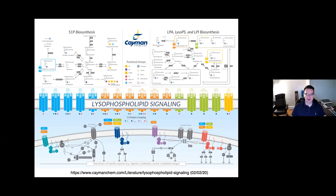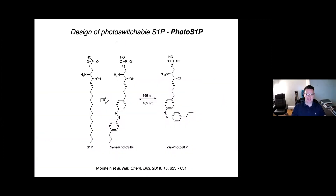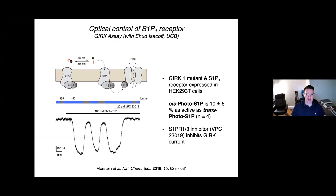We then thought about applying this to lipids where this logic doesn't apply — where you don't have a saturated versus unsaturated dynamic. One very important class of sphingolipids is sphingosine-1-phosphate, which activates a family of GPCRs and is implicated in various important biological processes. To develop a tool that would allow us to control sphingosine-1-phosphate biology with light, we again installed the photoswitch in the lipid tail of sphingosine-1-phosphate, and were pleased to find that this gave us very good optical control of sphingosine-1-phosphate receptor 1 in an initial assay.